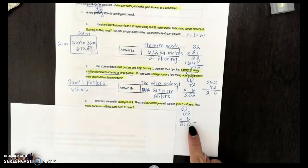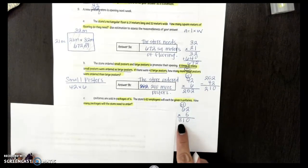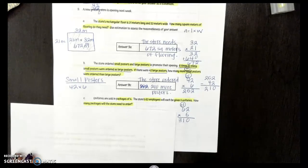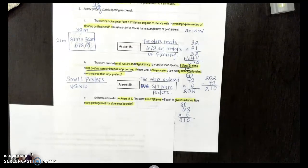5 times 2 gives me 10. So 0 goes here. 1 goes right here. I'm going to circle. 5 times 6 gives me 30. Add my 1. I have 31. So I know that the store needs to order 310 uniforms.